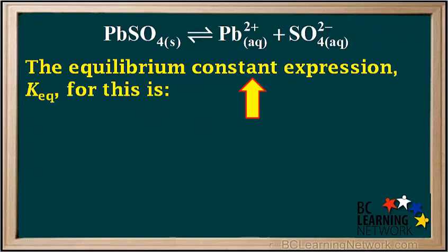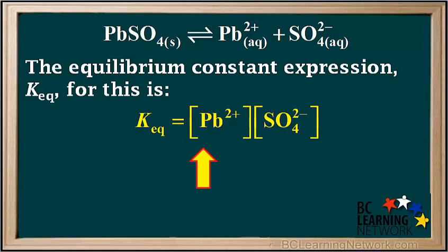The equilibrium constant expression, Keq, for this is: Keq equals the concentration of Pb2+ times the concentration of SO4 2-. Remember, because PbSO4 is a solid, its concentration is constant, so it's left out of the Keq expression.